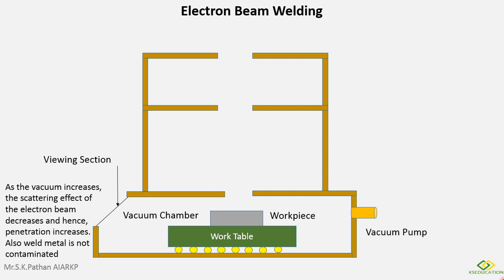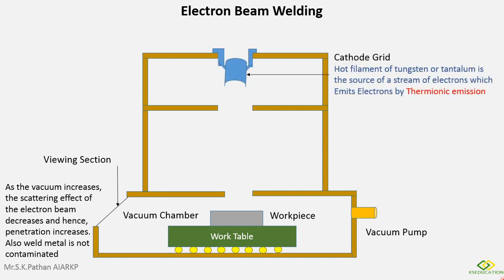A vacuum pump is provided to control the vacuum level in the chamber. On the top of the machine, a cathode grid is provided, made of tungsten or tantalum, which is a hot filament and the source of electrons. It emits electrons by thermionic emission. Thermionic emission is the liberation of electrons from an electrode by virtue of its temperature.